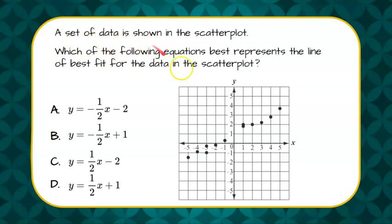We are given that a set of data is shown in this scatter plot below. Which of the following equations best represents the line of best fit for the data in the scatter plot?